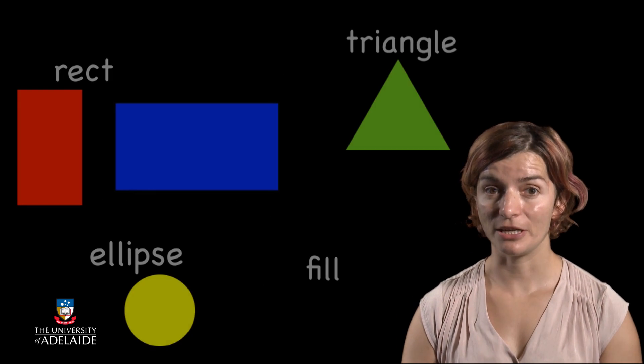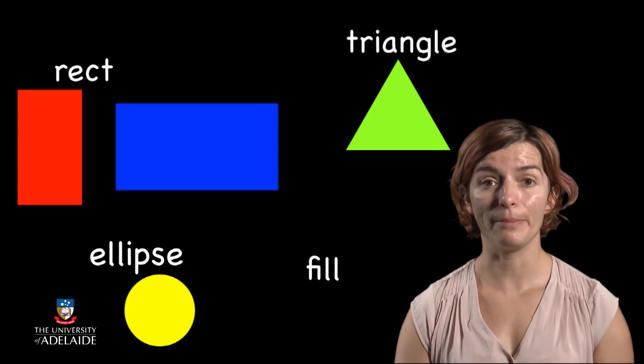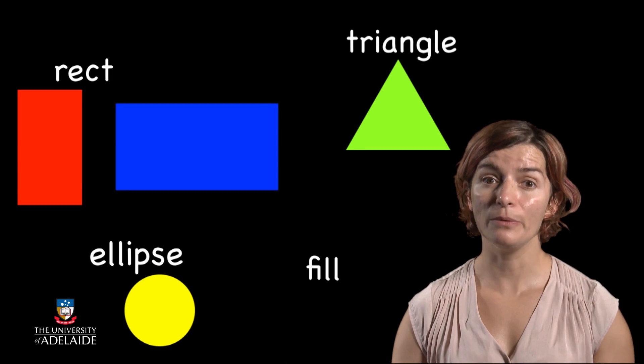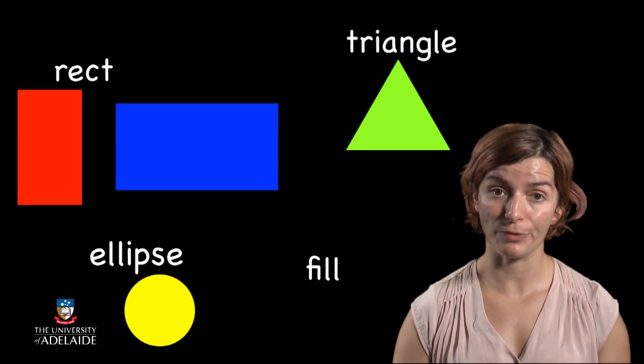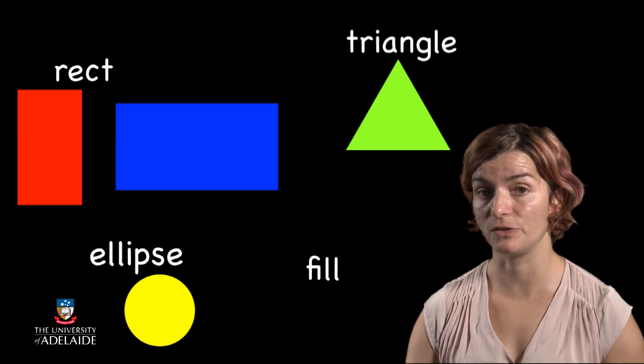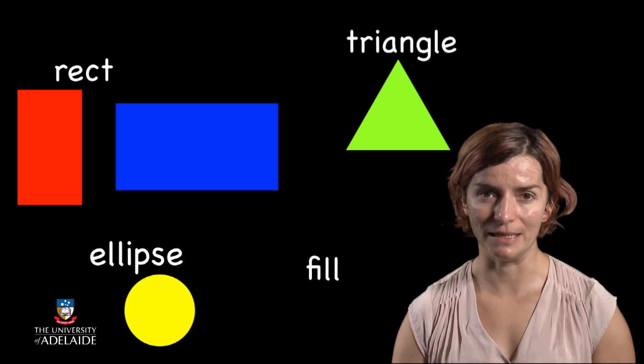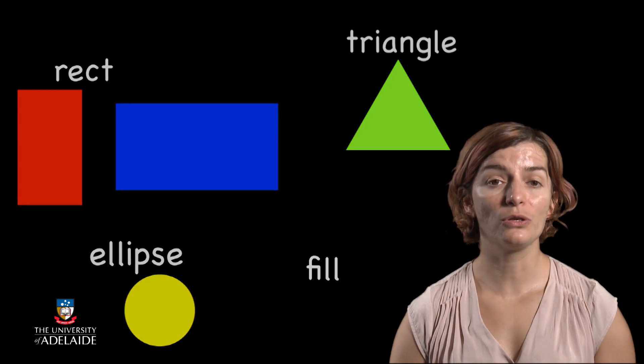Welcome back to Think Create Code. In our last sessions, we introduced the Processing programming language, and we saw how it can be used to create basic shapes such as rectangles, circles, and triangles with various colors. We also introduced the concept of an algorithm, which is a sequence of instructions that any program has to follow in order to achieve a task.